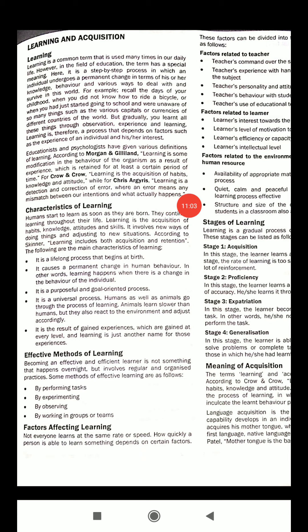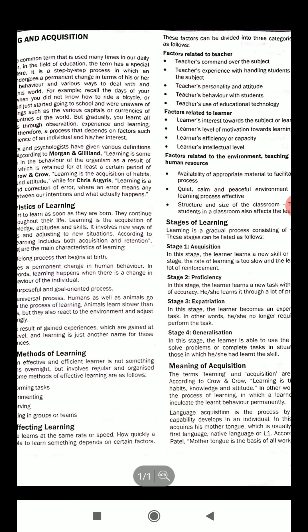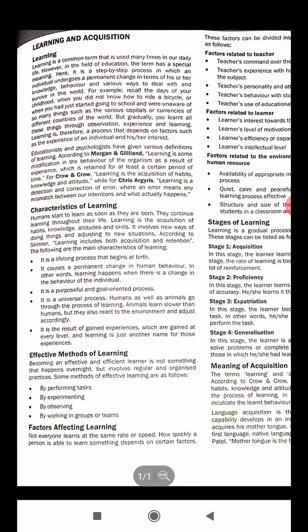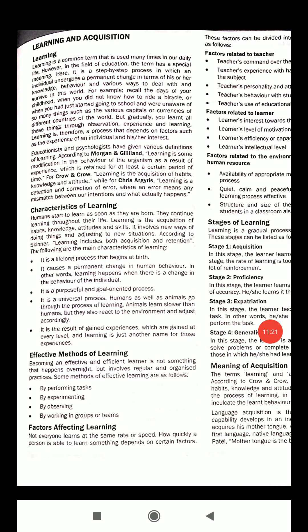Initially we may think negatively about something, but after learning that particular thing, we may think in a better, more positive way. This is what learning is about. So here we have the characteristics of learning, the factors, and the stages — how many stages we have. After that, we have acquisition.